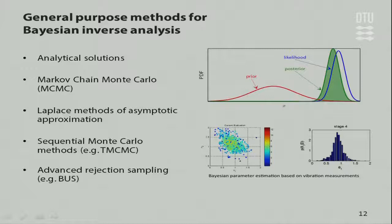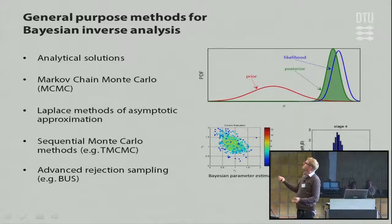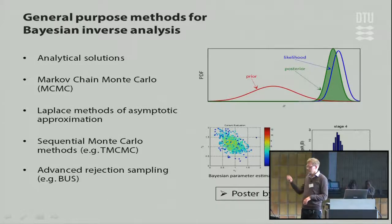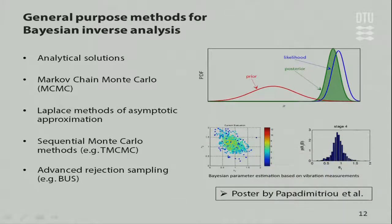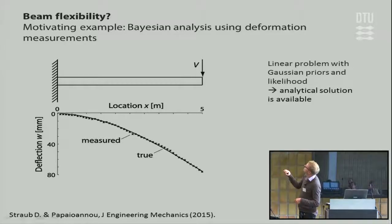There are general-purpose methods for going from response back to input: sometimes analytical solutions, Markov chain Monte Carlo, approximation methods, sequential methods, and rejection sampling methods. A poster by Costas Papadimitriou shows some of these. As a brief example: assuming a beam where we measure deformation with a video device at each point, we can back-calculate via inverse analysis to get an estimate of the flexibility — which is one over the modulus of elasticity.